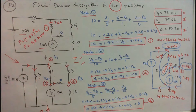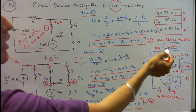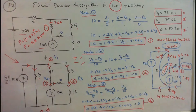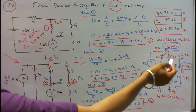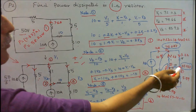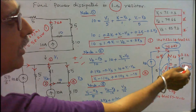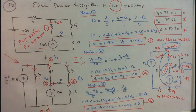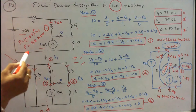Now I know the nodal voltages and can find the branch currents. Marking on the redrawn circuit: V1 = 72.03, V2 = 79.66, V3 = 55.93. Current in the 1 ohm resistor = (79.66 - 72.03) / 1 = 7.63 amps. Current in the 5 ohm resistor = (72.03 - 55.93) / 5 = 3.22 amps. Current through 10 ohm = V3 / 10 = 55.93 / 10 = 5.59 amps. Power dissipated in the 1 ohm resistor = I² × R = 7.63² × 1 = 58.22 watts.